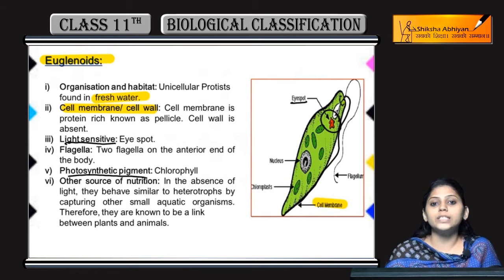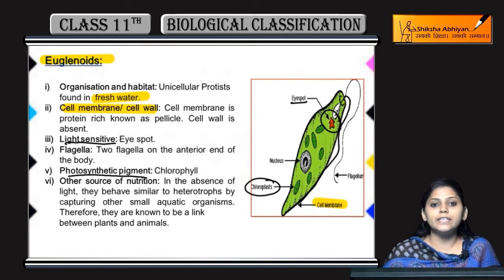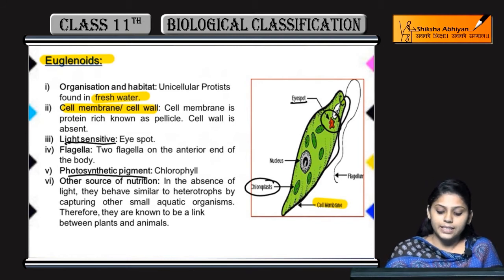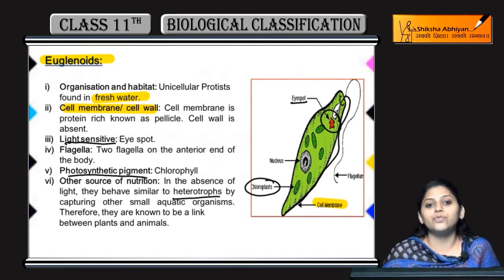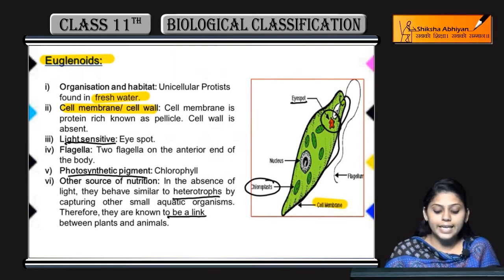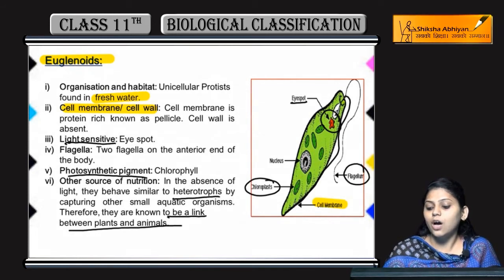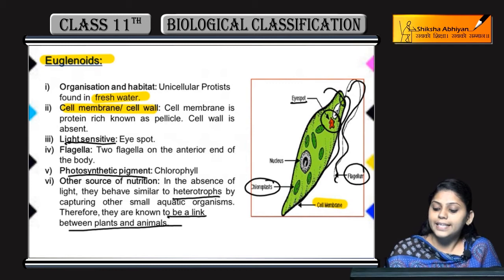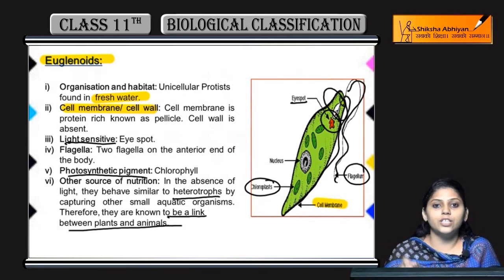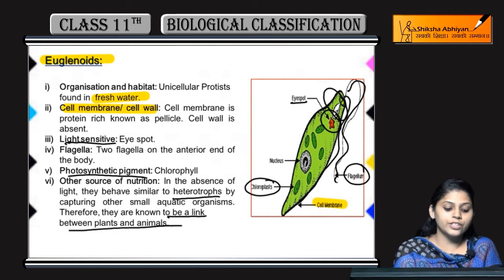Inke paas photosynthetic pigment bhi hota hai — chloroplast present hota hai jismein chlorophyll hota hai, jiski wajah se yhe plants ki tarah bhi act karte hai. Kuch conditions mein yhe heterotrophic nature ke hote hai, animals ki tarah bhi act karte hai. Toh inhein link between plants and animals kaha jata hai. They also bear flagella — yhe movement mein help karta hai, aur jo inka anterior portion hai, yahaan pe do flagella present hote hai.